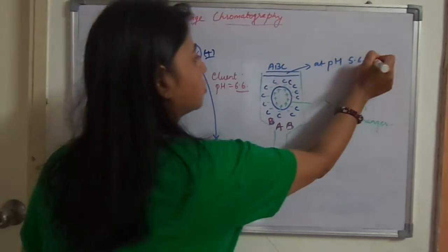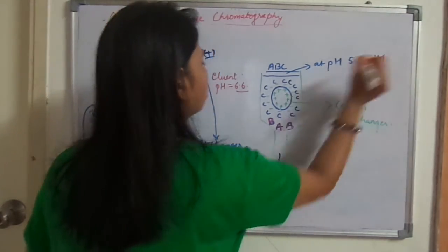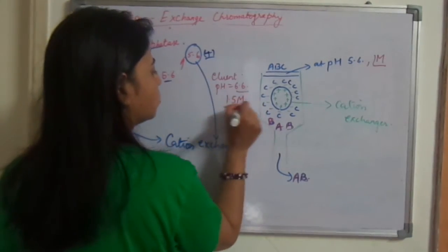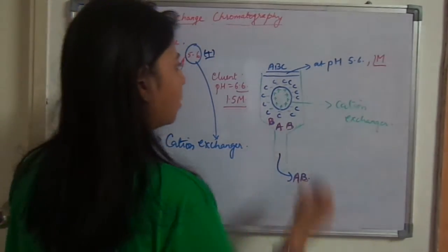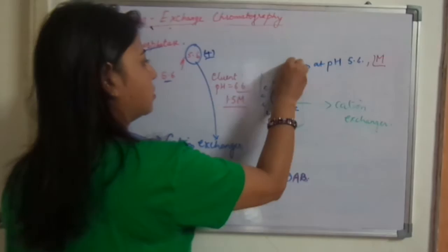And the higher, suppose this has the ionic strength of 1 molar. And the higher ionic strength, this is 1.5 molar. Now I will delete this part from here.